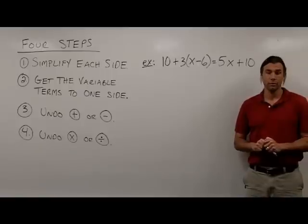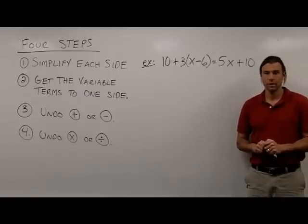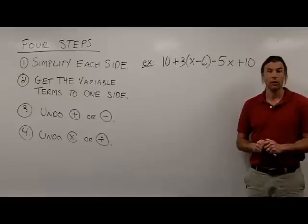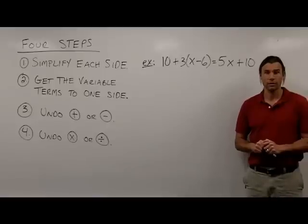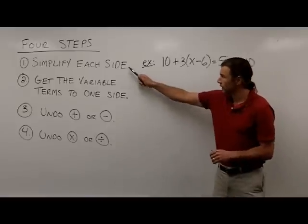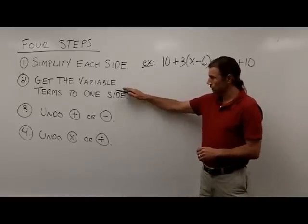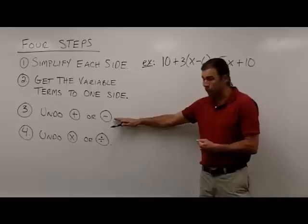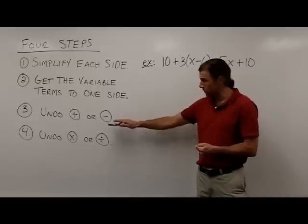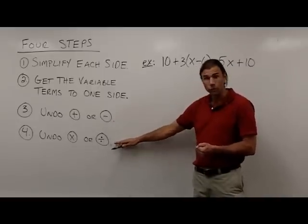In this next example, I'm going to need all four steps to solve. So I'm going to need to simplify each side, get the variable terms to one side, undo addition or subtraction, and then finally undo multiplication or division.